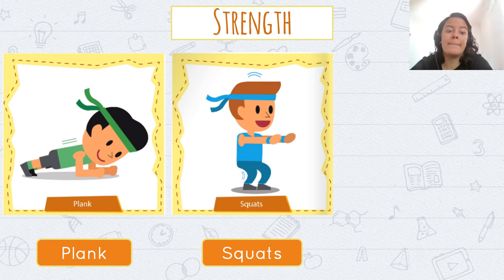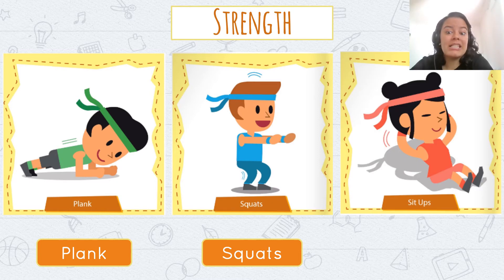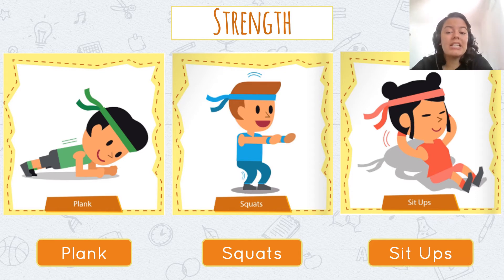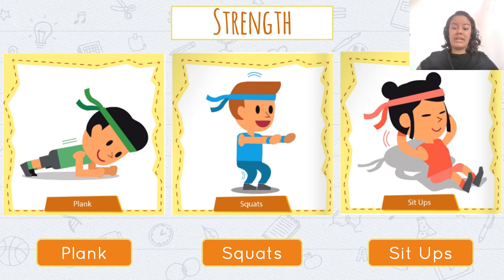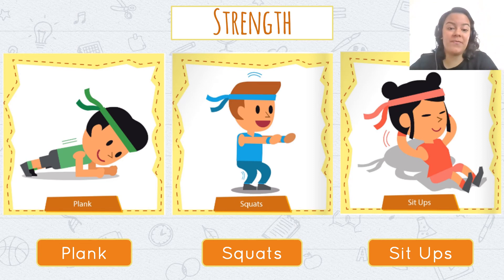Squats are on your legs. Sit-ups. Sit-ups. Let's repeat. Sit-ups. They make your abdomen strong. So, plank, squats, sit-ups.